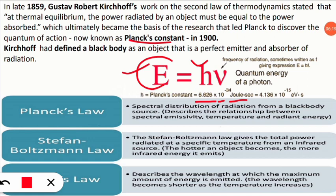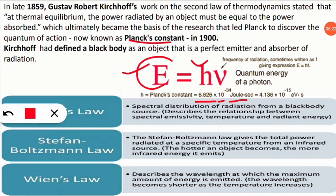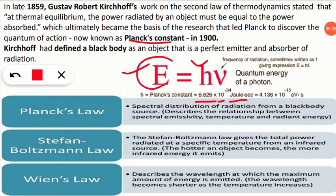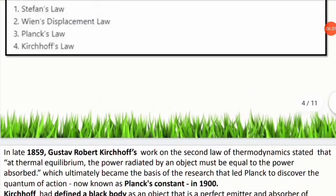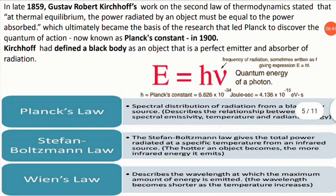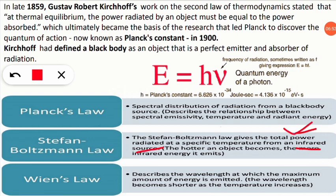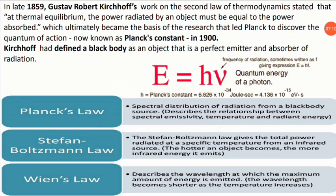Note these points as they will help in further examinations. In electron volt per second, Planck's constant value is 4.13 × 10⁻⁵⁰. The other laws in the options: Stefan's law gives the total power radiated at a specific temperature from an infrared source; Wien's displacement law describes the wavelength at which the maximum amount of energy is emitted. Know the small differences between these four laws.